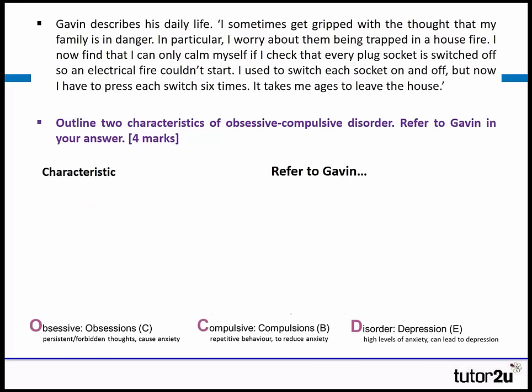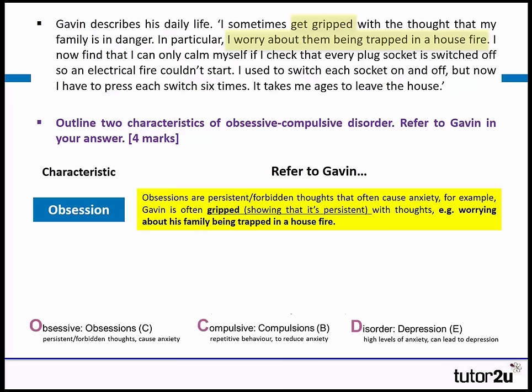Let's think about how we might write that again. For the obsessions, we want to get in that he's gripped and he worries about this house fire. So this time: obsessions are persistent thoughts that often cause anxiety. For example, Gavin is often gripped — showing that it's persistent — with thoughts such as worrying about his family being trapped. That shows it's a persistent thought, a key component of the obsession.